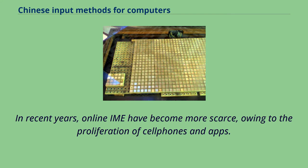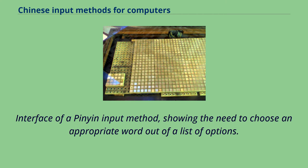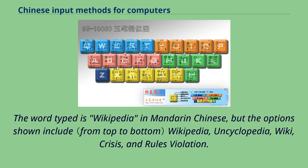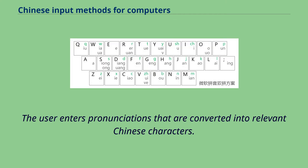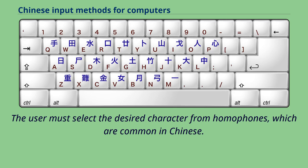In recent years, online email has become more scarce owing to the proliferation of cell phones and apps. The interface of a Pinyin input method shows the need to choose an appropriate word from a list of options. The word typed is 'Wikipedia' in Mandarin Chinese, but the options shown include Wikipedia, Encyclopedia, Wiki, Crisis, and Rules violation. The user enters pronunciations that are converted into relevant Chinese characters, and must select the desired character from homophones, which are common in Chinese.